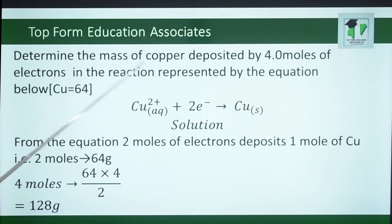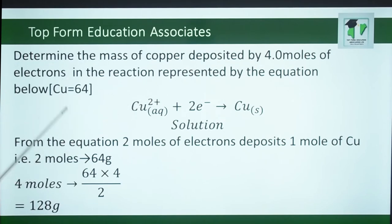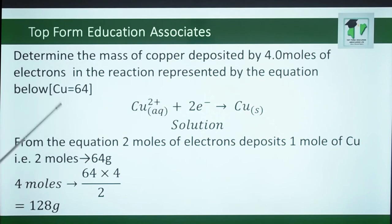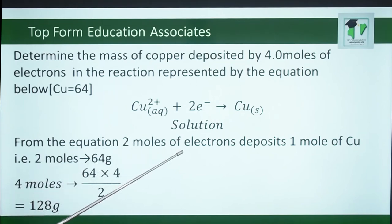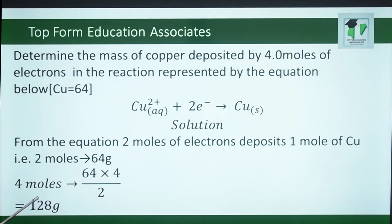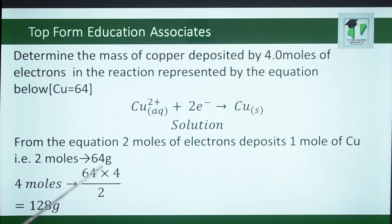Another example. Determine the mass of copper deposited by 4.0 moles of electrons in a reaction represented by the equation below, where the molar mass of copper is 64. From the equation, 2 moles of electrons deposit 1 mole of copper. Therefore, 4 moles will deposit 64 (the molar mass of copper) multiplied by 4 divided by 2, to give 128 grams.